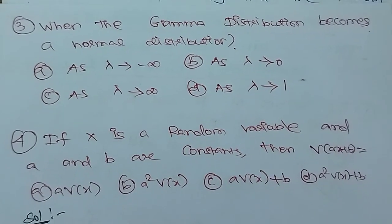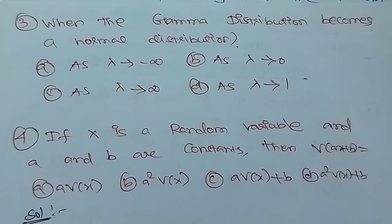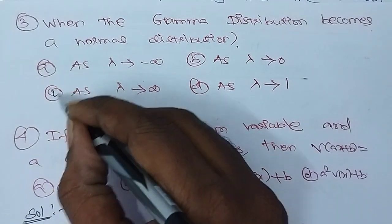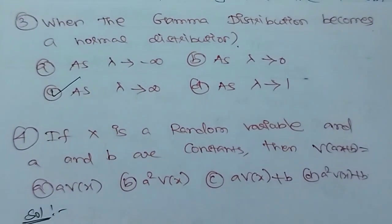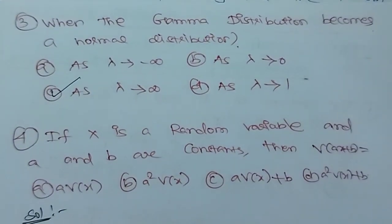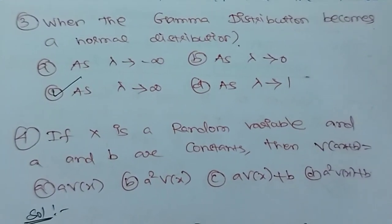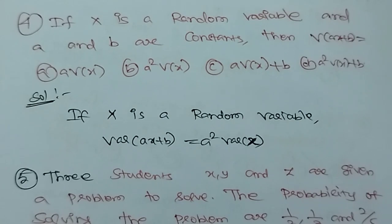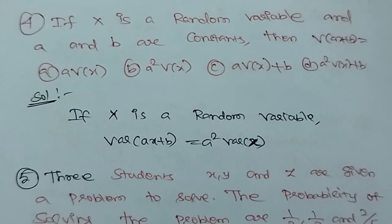When a Poisson distribution becomes a normal distribution: when lambda approaches infinity, the Poisson distribution becomes a normal distribution. This is a very basic and standard property.